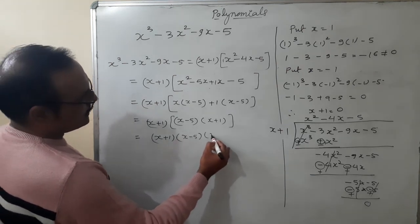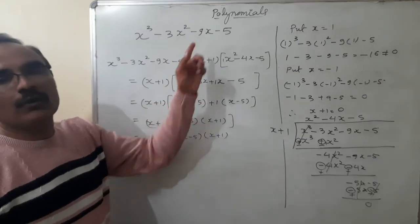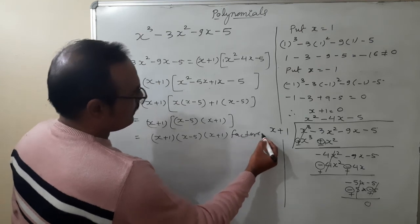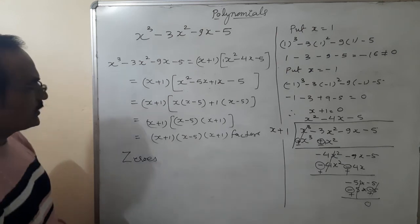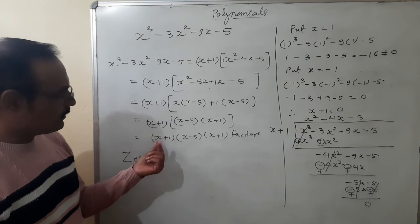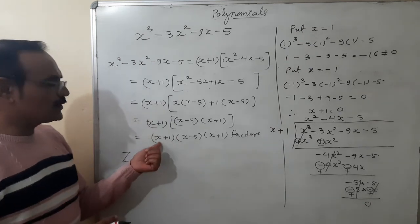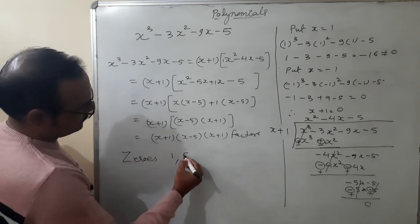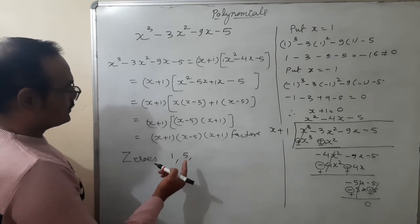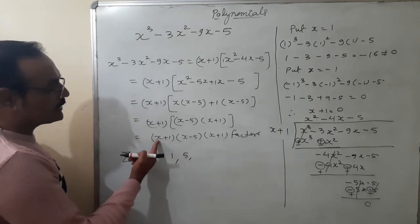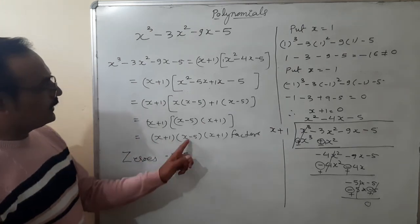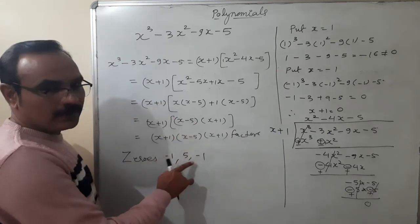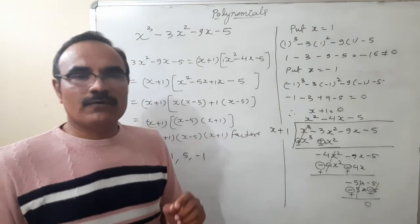So the three factors of this cubic polynomial are: (x plus 1), (x minus 5), and (x plus 1). For finding the zeros: x plus 1 equals zero gives x equals minus 1; x minus 5 equals zero gives x equals 5; x plus 1 again gives x equals minus 1. So the zeros are minus 1, 5, and minus 1.